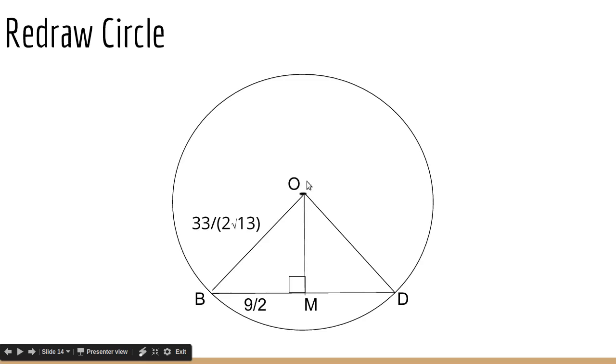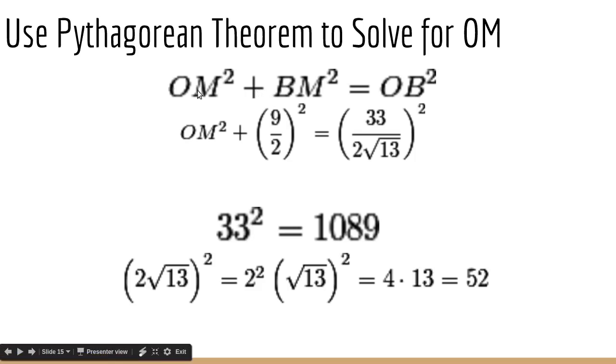And because this is an isosceles triangle, OB equals OD since they're both radii, the altitude, this is an altitude, bisects the base. The base is BD. So that means BM is half of BD, which is 9 halves. So BM is 9 halves. And then we have this right triangle. What we want to find is OM. So we can find OM using the Pythagorean theorem.